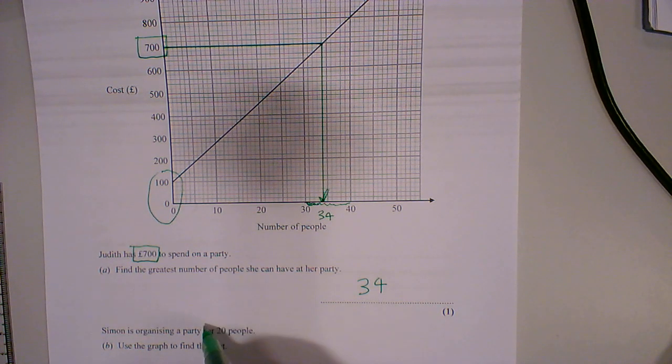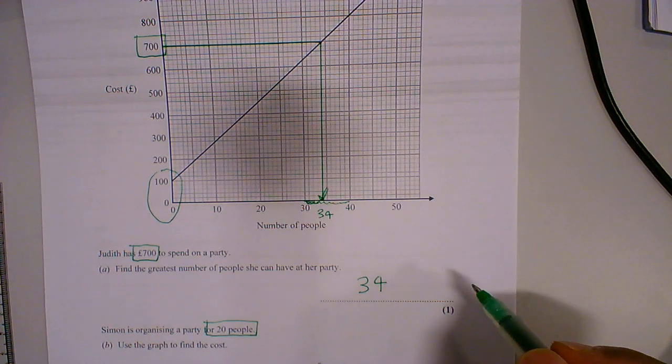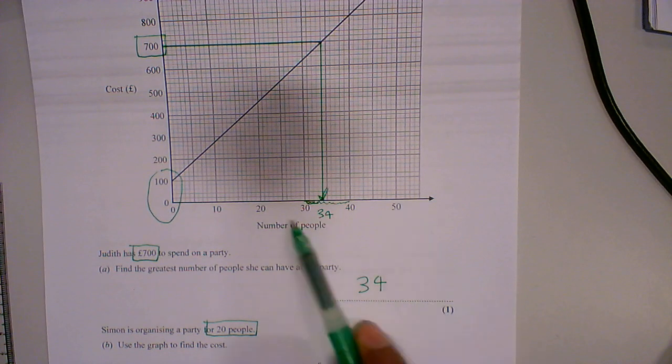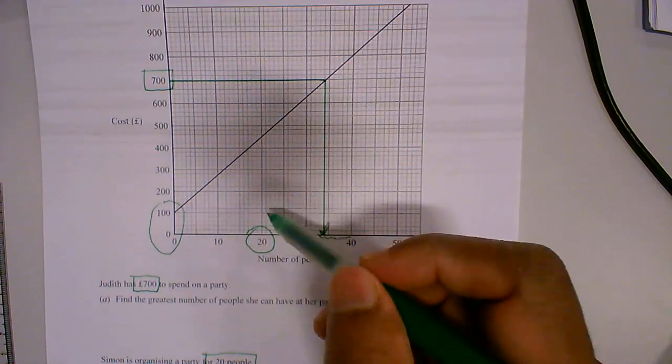So now we're looking at 20 people. We're going to do the same thing in reverse order. We find 20, number of people, and 20 is here.